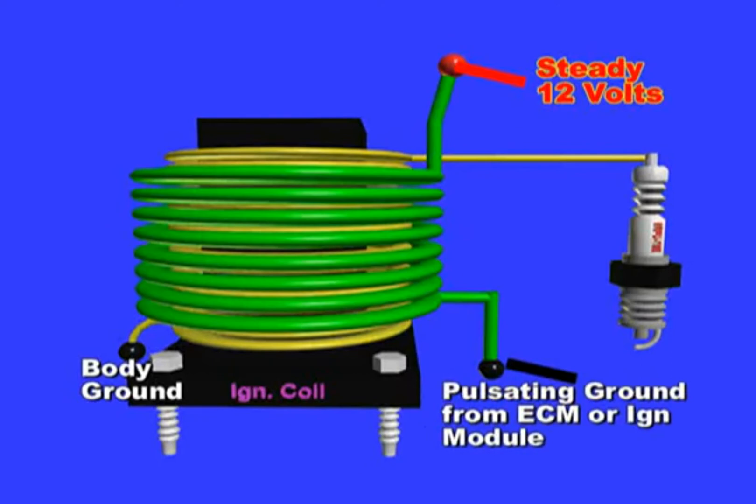To test, simply probe with a multimeter right at the ECM or ignition module pulsed wire itself. If no voltage is seen with key on, engine off, then trace the open circuit. If 12 volts is seen, then the ECM or module is defective internally.